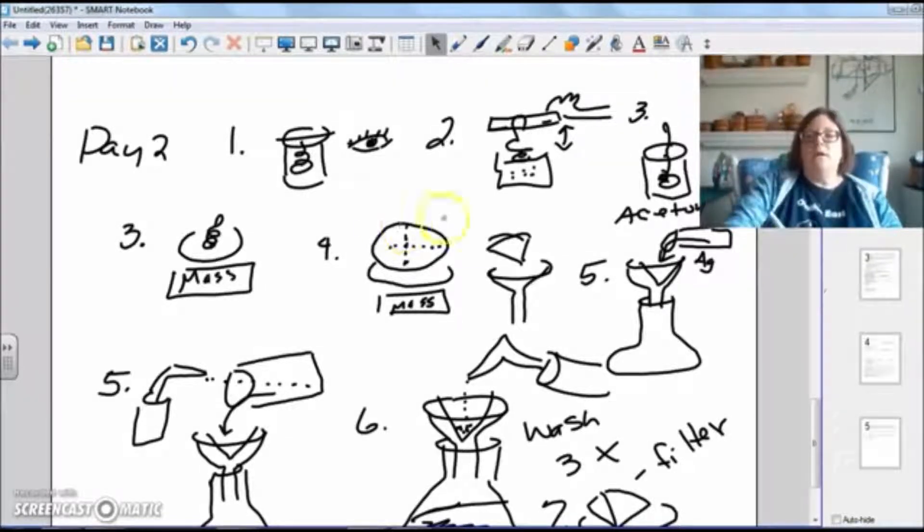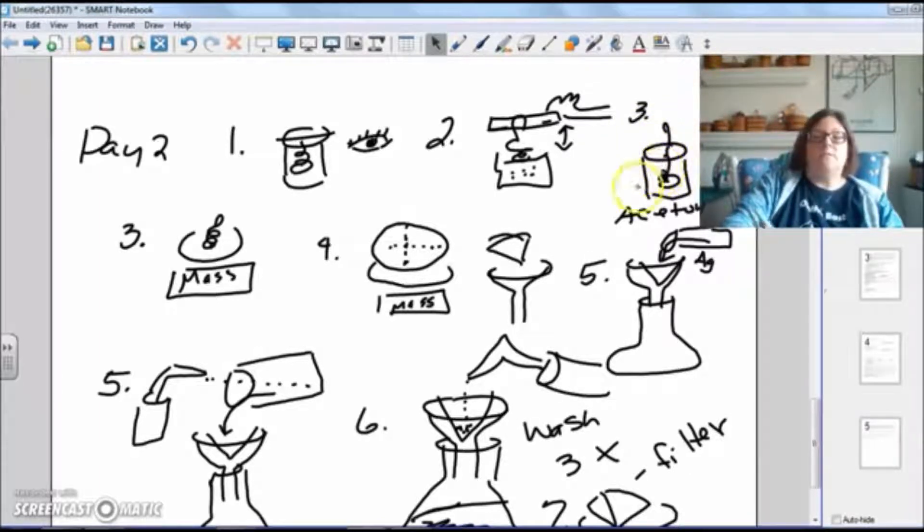Step three, you will get, you'll have, I will have acetone for you. You'll probably put one container of it at each station. You'll dip your copper wire into the acetone and then let it dry. This should dry fairly quickly, that's why we're dipping it into the acetone. Then you'll take your copper wire, find the final mass of it, and then you'll record that.